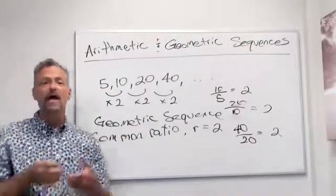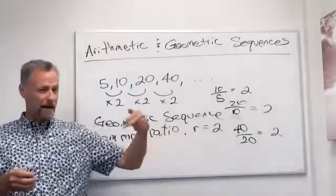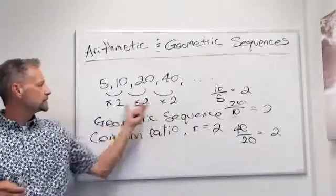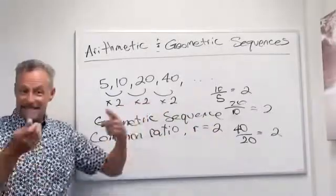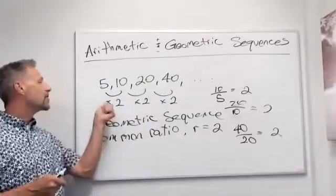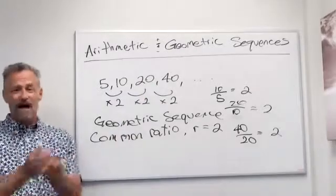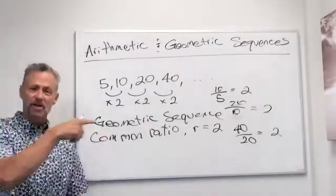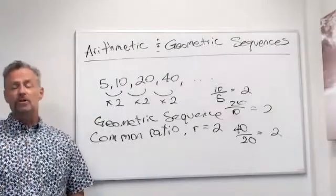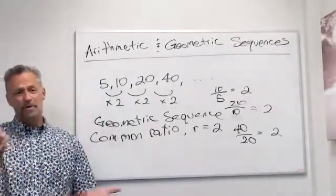So remember, that's all there is to it. An arithmetic sequence — you add the same number each time, and the number you're adding is called the common difference. If we multiply, we've got a geometric sequence, and the common number we multiply is called the common ratio. I've got a whole bunch of videos based on arithmetic and geometric sequences in my Math for Liberal Arts grouping of videos — you may want to look at them.